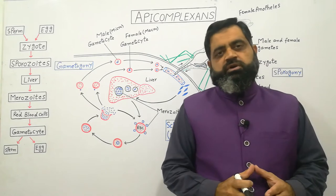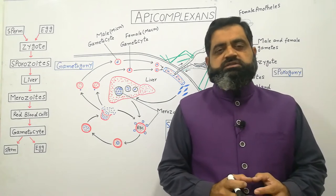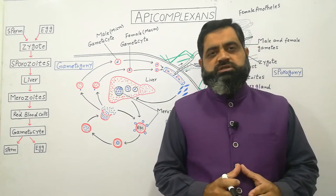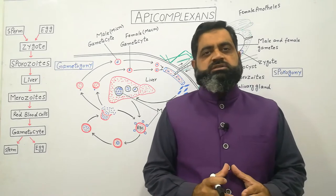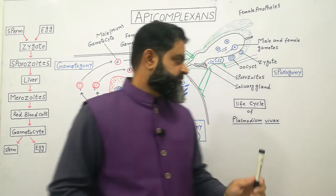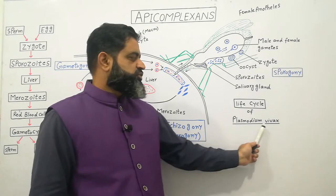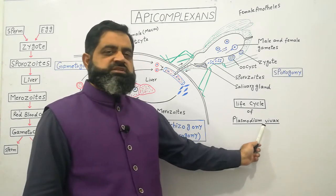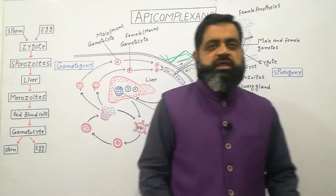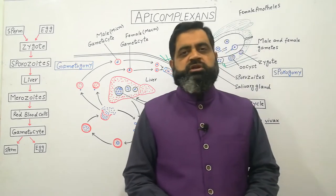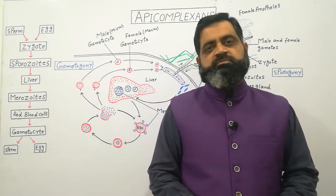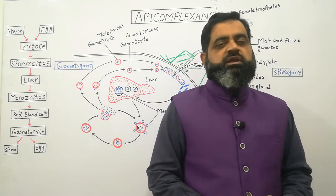The best example of Apicomplexa is Plasmodium. Today we are going to discuss the life cycle of Plasmodium vivax, which is the scientific name. It has different species, but the most common is Plasmodium vivax, which causes malaria in humans.